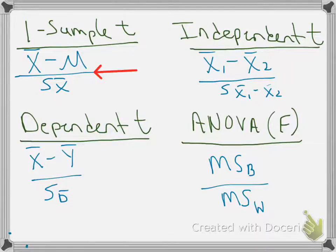Now let's compare it to the formula for the independent t-test. Again, what we have on the top is just a difference between means. In this situation it's a difference between two observed sample means — you have two independent samples and you're going to compare their means. And on the bottom you have the standard error of the difference between the means.